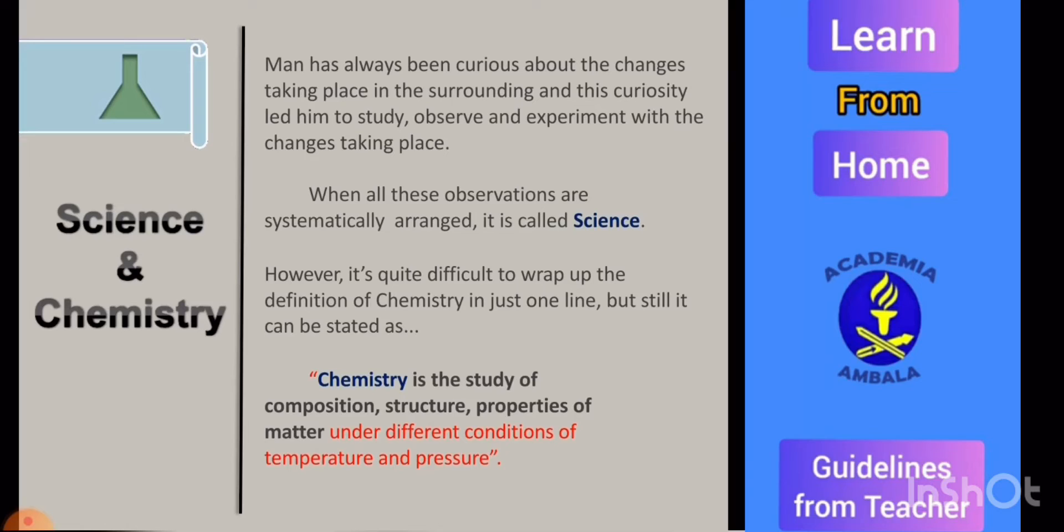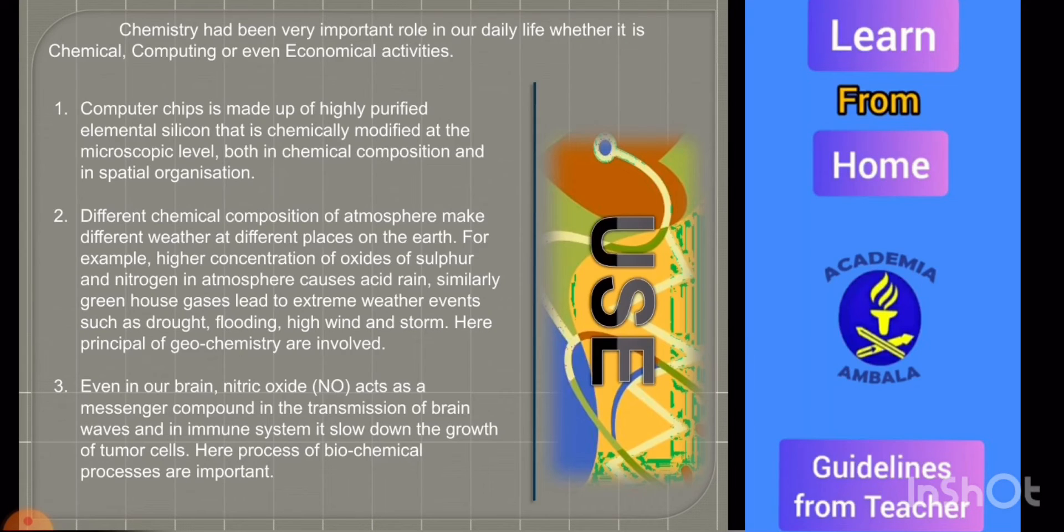Now what is the role of chemistry in daily life? It has been observed that chemistry has a very important role in our daily life whether it is chemical computing or even economical activities. First role of chemistry: computer chips made up of highly purified elemental silicon that is chemically modified at the microscopic level, both useful and helpful in making semiconductors.